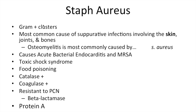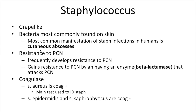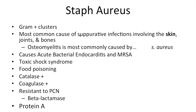Staph aureus is gram-positive and clustered. It's the most common cause of suppurative infections involving the skin, joints, and bones — think cutaneous abscess. Osteomyelitis is most commonly caused by Staph aureus, so if a question offers Staph aureus vs. Strep, go with Staph aureus. It causes acute bacterial endocarditis and MRSA — the SA in MRSA literally stands for Staph aureus.